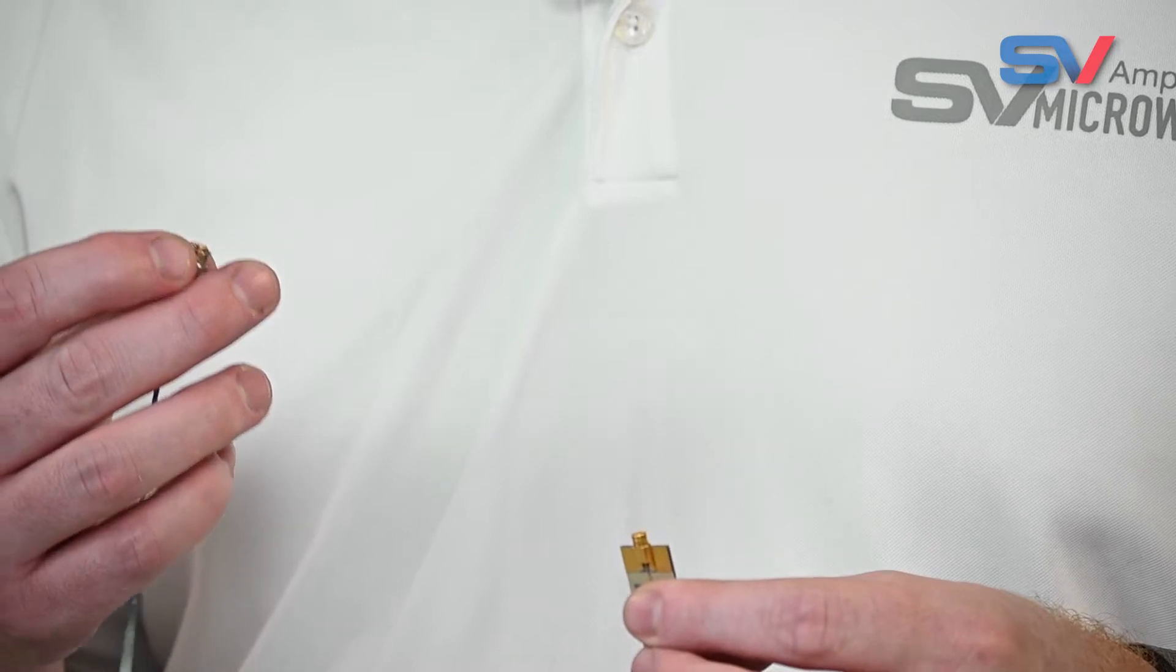This is our SMP edge launch connector and at the end of this cable assembly we have the mating connector for the QB SMP. This is an 047 cable assembly, the QB is designed to work on the 085 cable as well.